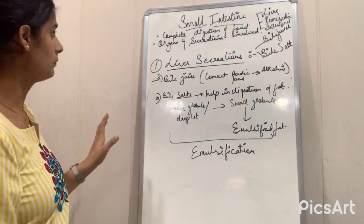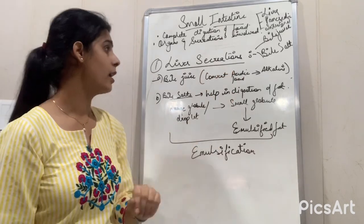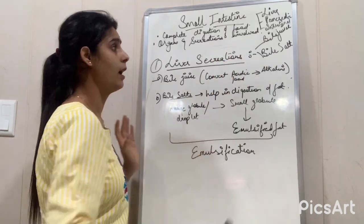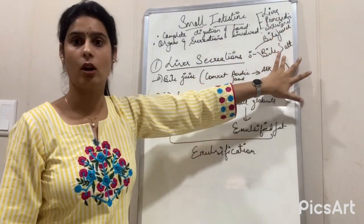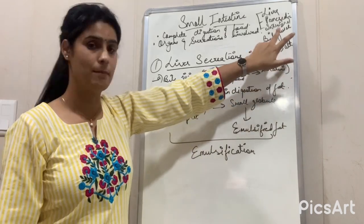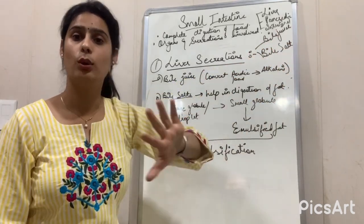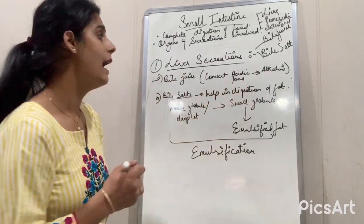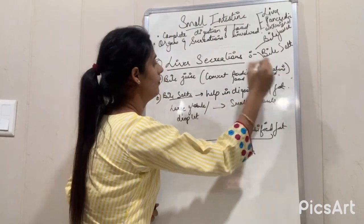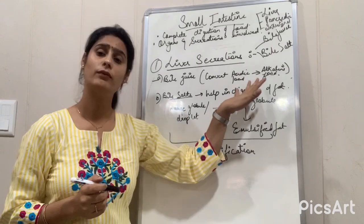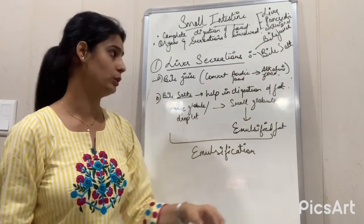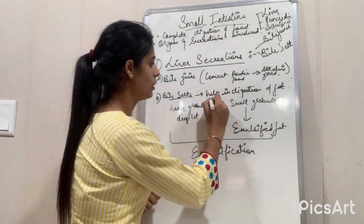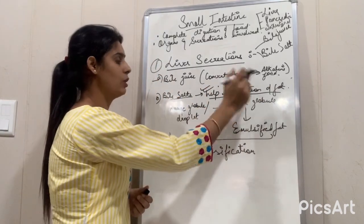First, we talk about liver secretions. The liver secretes two things: bile juice and bile salts. The function of bile juice is to convert acidic food, which came from the stomach, into alkaline food. The function of bile salts is to help in the digestion of fats.